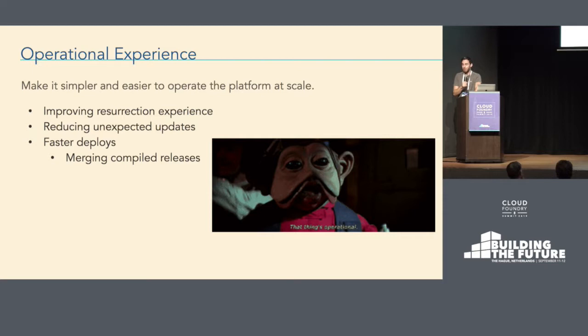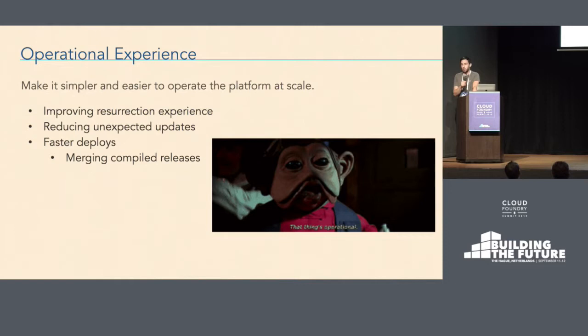Please let us know if you keep seeing unexpected update issues — it's something we're actively focusing on, but it's hard to know what rough edges remain without real-world production use cases. Another thing we're about to pick up is support for compiled releases. When you use BOSH deploy and include releases in the manifest, BOSH uploads them in parallel, but you can't include the same compiled release for Windows and Linux in the same manifest. We're adding support to merge these releases together so you can get the benefits of multiple compiled releases for different operating systems while also taking advantage of parallel upload in the deployment manifest.